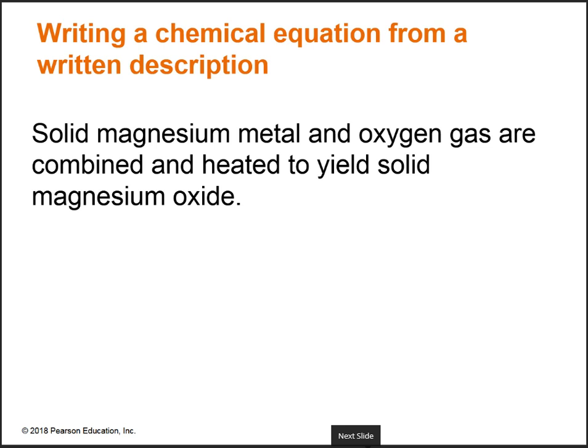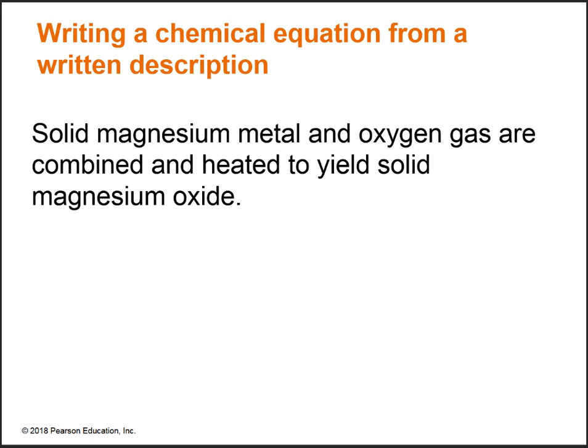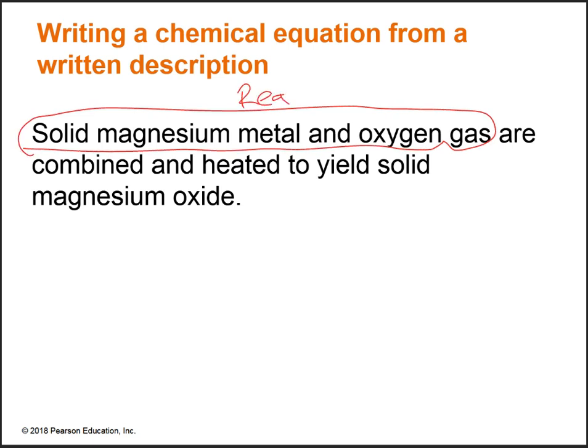We went from a chemical equation to a written description. Now we need to do the reverse — go from the written description to the chemical equation. You need to know Chapter 6 for this. If you can't look at a compound name and write the chemical formula, you won't be able to convert a written description to an equation. Let's separate our products from our reactants: solid magnesium metal and oxygen gas are combined — stop there, these must be our reactants.